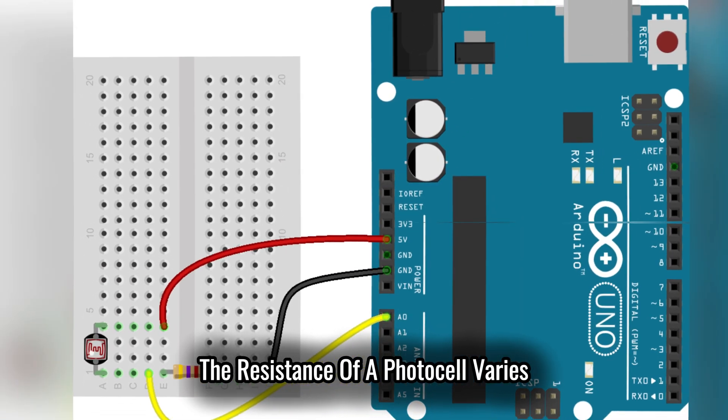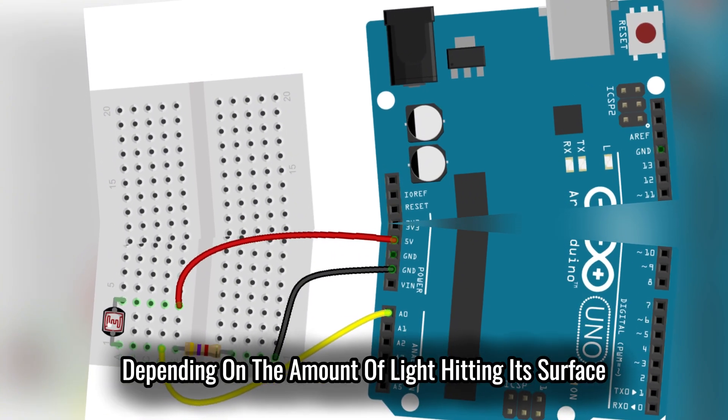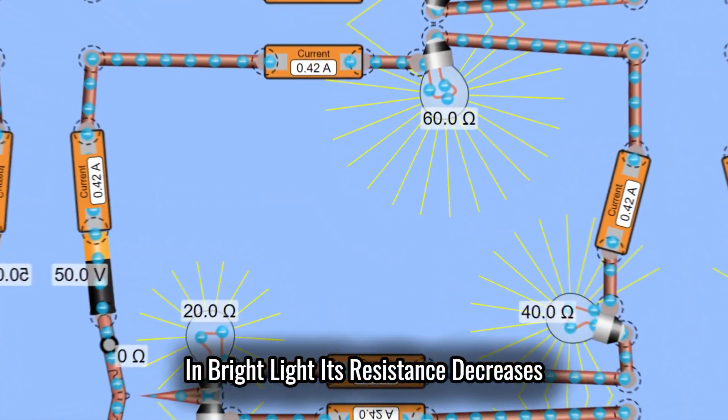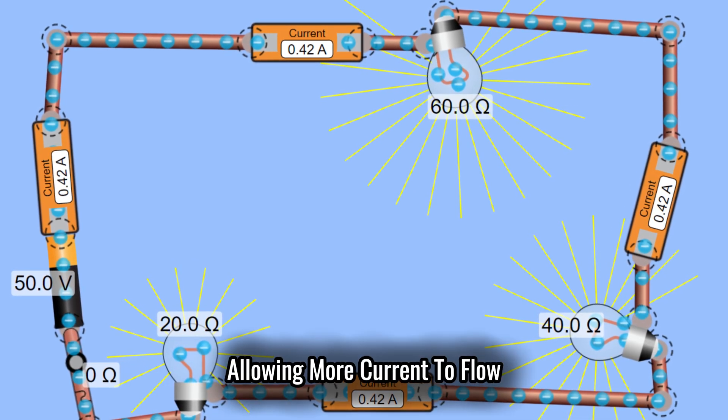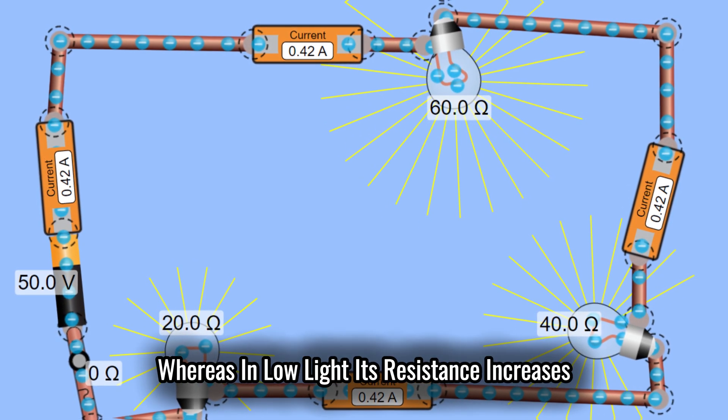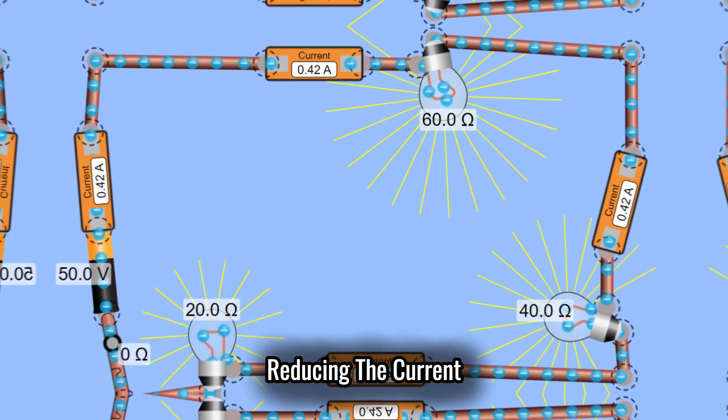The resistance of a photocell varies depending on the amount of light hitting its surface. In bright light, its resistance decreases, allowing more current to flow, whereas in low light, its resistance increases, reducing the current.